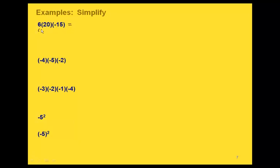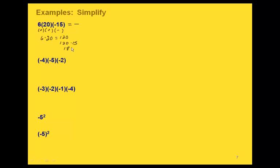So in this first example we have a plus, a plus, and a negative. Since we only have one negative number, our answer is going to be negative. Now we can just multiply 6 times 20 times 15 and we already have our sign figured out. 6 times 20 is 120, and 120 times 15 gives us 1800. So our final answer is negative 1800.